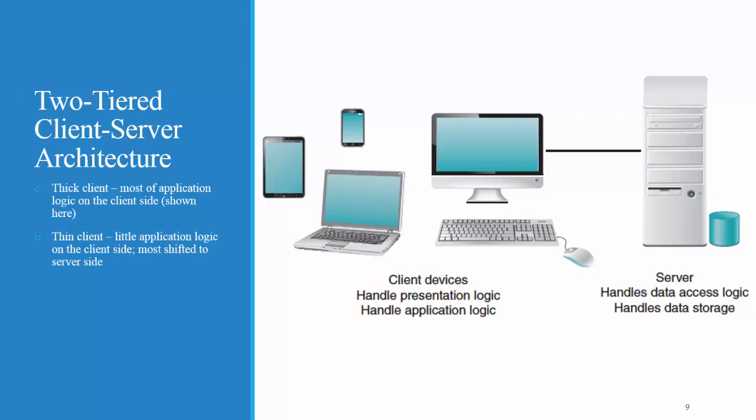Here's an example of a two-tiered client-server architecture. In this figure, you can see that the server handles the data storage and the data access logic, and the client handles the presentation logic and the application logic. This means that the software program resides on the computer itself — this is called a thick client setup. A thin client setup is wherein the application logic is shifted to the server side instead of the client side. Microsoft Office would be a system using the thick client architecture because the software itself is stored on your client computer. You don't require a connection to another server in order to run that application.